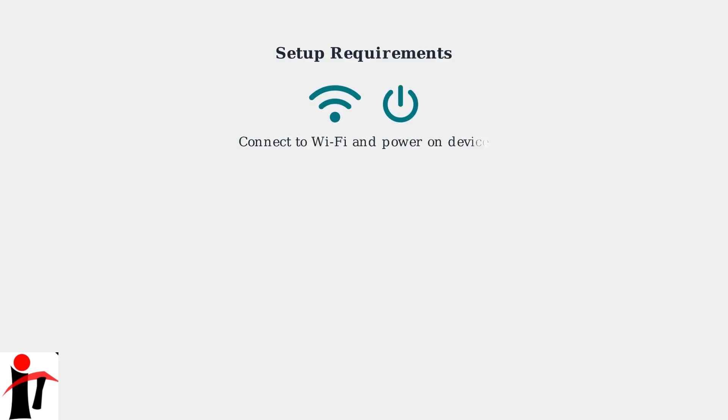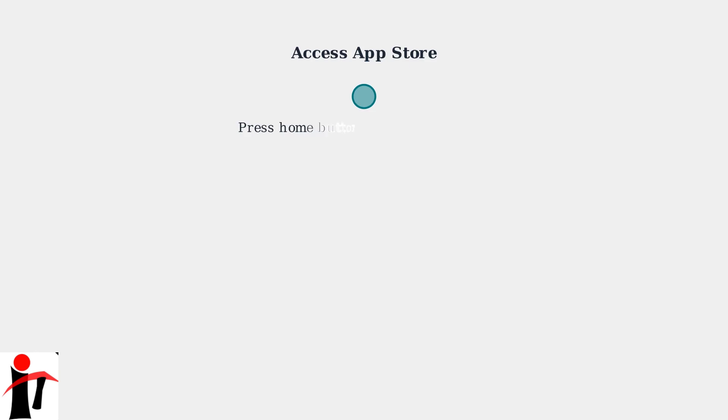ElementZumo TV allows you to expand its functionality by downloading and installing apps. Ensure your device is connected to Wi-Fi and powered on. Navigate to the Apps section on the home screen to access the App Store.